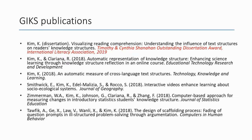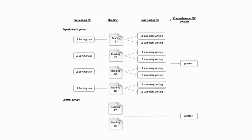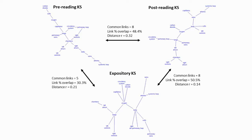I'm going to briefly share my dissertation, because in it I used both tools I explained today: PFNetDRAG and GIFS. This dissertation was selected by ILA this year. My dissertation considered the influence of narrative versus expository text on bilingual reader knowledge structure for both high-proficiency and low-proficiency readers. I used narrative and expository texts of the same content from a whole circulatory system unit. All participants completed pre-reading sorting tasks in either L1 or L2, then read either narrative or expository text, wrote a summary essay in L1 or L2, and completed comprehension post-tests. I combined all sorting and lesson text data and summary essays into PFNet for comparison, then compared three networks to address two research questions.